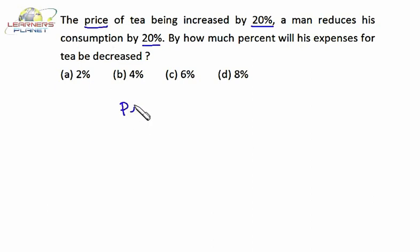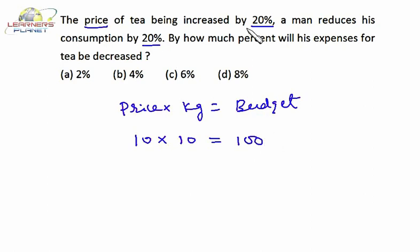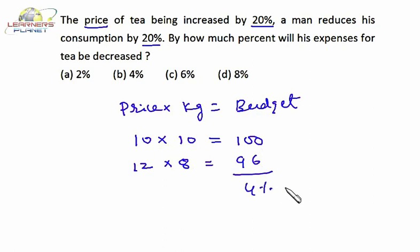There are two variables: price and consumption. Price per kilogram into consumption in kilograms equals total expenses on that commodity. Let the price be 10 and consumption be 10 kilograms per month, so expenses on tea are 100 rupees a month. Price is increased by 20 percent so it's 12, and consumption is decreased by 20 percent so it's 8. The new expenses are 96.